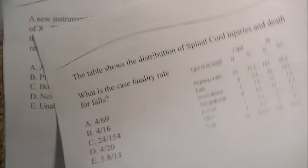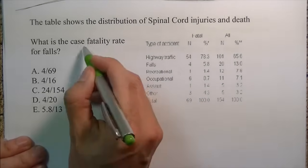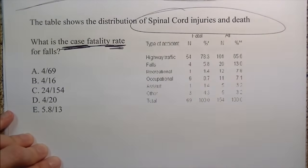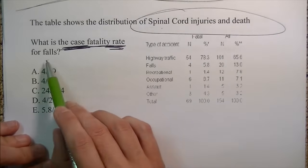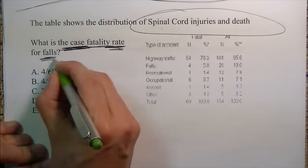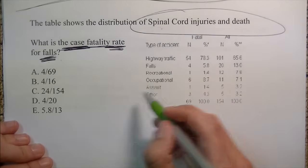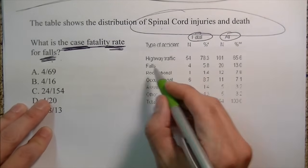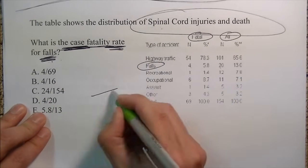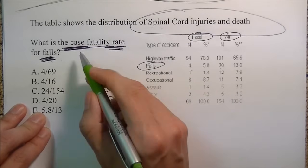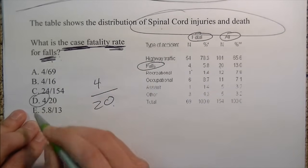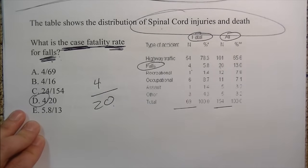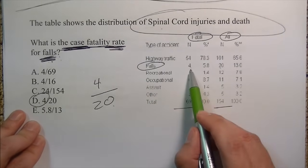Case fatality rate: the table shows distribution of spinal cord injuries and deaths. What is the case fatality for falls? All I care about is falls — stay within that category. How many falls total? 20. How many were fatal? 4. So case fatality for falls is 4 out of 20.